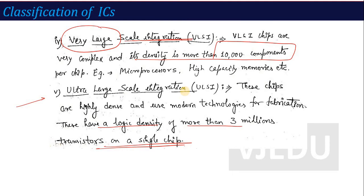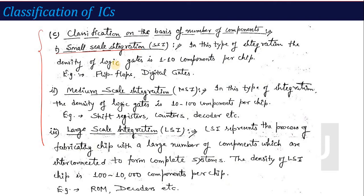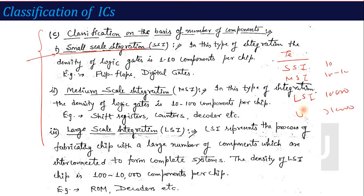To summarize IC technology: IC is when you connect a number of components on a single semiconductor chip. We have classified IC by application (analog and digital), by fabrication (monolithic and hybrid), and most importantly by number of components. You can remember this in a table format: SSI has up to 10 components, MSI has 10 to 100, LSI has up to 10,000, VLSI has greater than 10,000, and ULSI has greater than 3 million components on a chip.